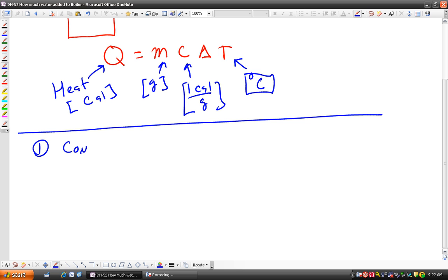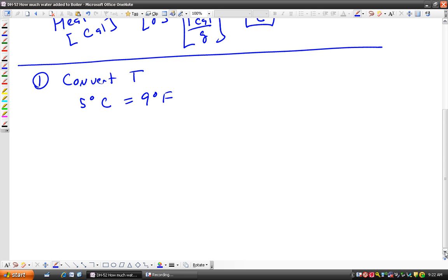Step number one, I'm going to convert the temperature. And a useful thing to know is that every five degrees Celsius is nine degrees Fahrenheit. That's the scale. That's why when you look at the temperature, degrees Celsius is always smaller than degrees Fahrenheit.